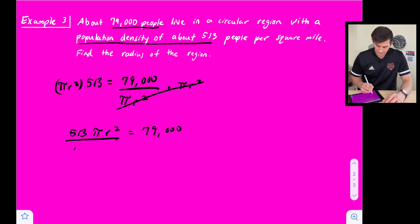So now we can divide here by 513 pi. That's going to get rid of the 513 and the pi, so we're just left with r squared on the left side. And once again in your calculator, 79,000 divided by, and here put 513 pi in parentheses.